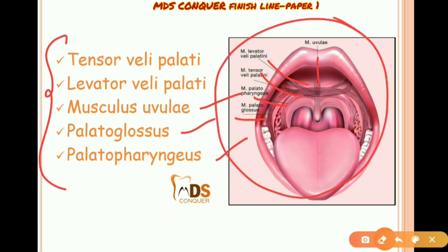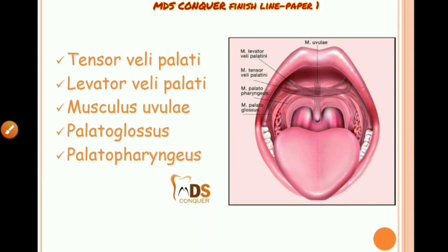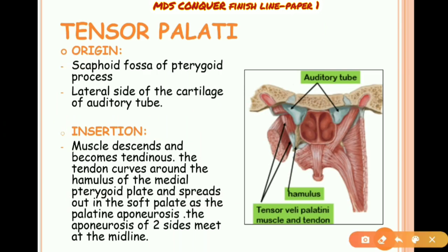Tensor veli palatini originates from the scaphoid fossa of the pterygoid process and the lateral side of the cartilage of the auditory tube. Its tendon curves around the hamulus of the medial pterygoid plate and then spreads out into the soft palate as the palatine aponeurosis.